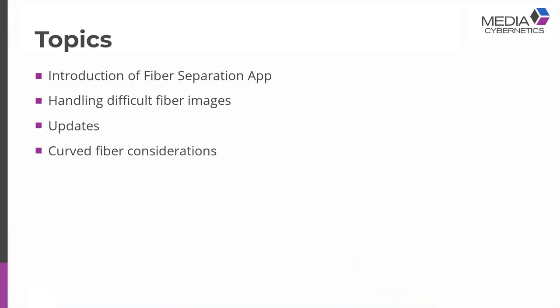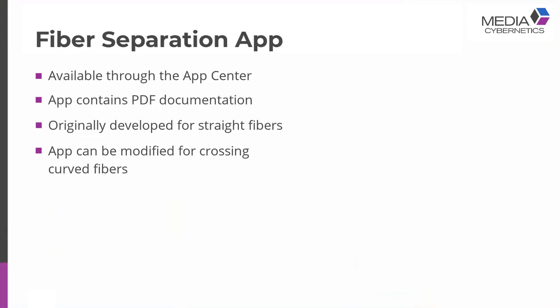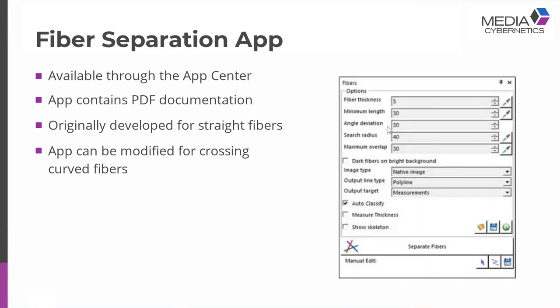The fiber separation app is available through the Apps ribbon in ImagePro and through the App Center. You can download it directly into ImagePro and it will install. If you've never tried that before, it's very simple and straightforward. There's PDF documentation available — if you hover over the app, there's a PDF explaining what the features are and a walkthrough of the fiber separation app. This is true for any app posted.